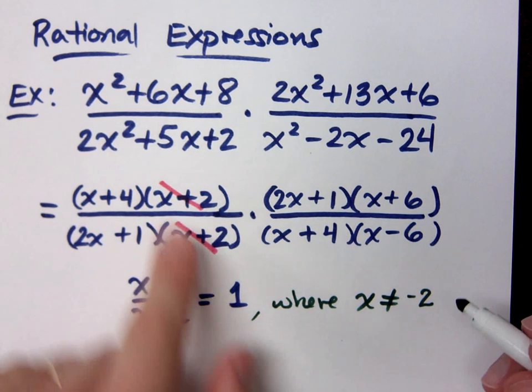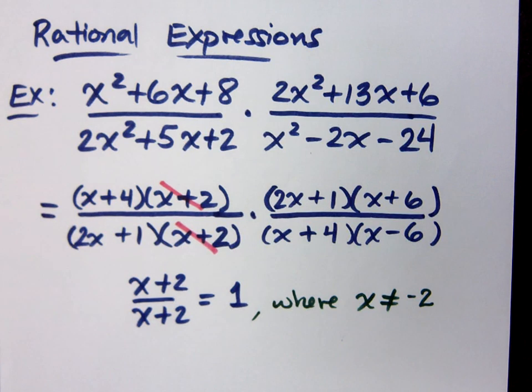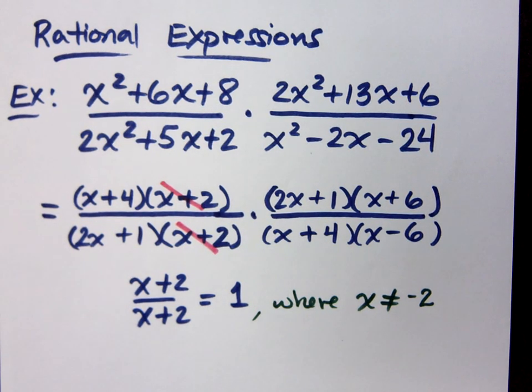We cannot let x equal a value that would cause the denominator to equal 0. So when I cancel this, this is with the understanding that, okay, great, I'm canceling it. It's a factor of 1, but I'm doing this with the understanding that I'm never going to talk about x being equal to negative 2.